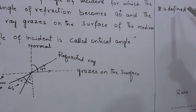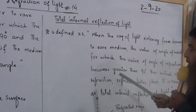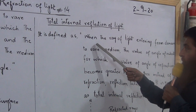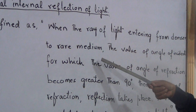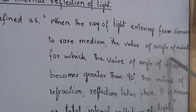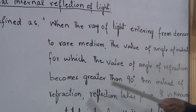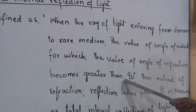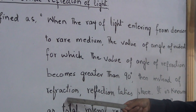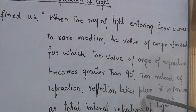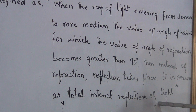The next topic is total internal reflection of light. We can define it as: when the ray of light enters from denser to rare medium, the value of angle of incidence for which the value of angle of refraction becomes greater than 90 degrees — then, instead of refraction, reflection takes place. This is known as total internal reflection of light.